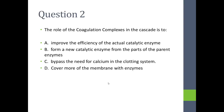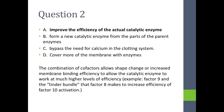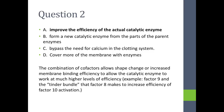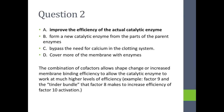Question 2: The role of the coagulation complexes in the cascade is to — A, improve the efficiency of the actual catalytic enzyme; B, form new catalytic enzymes from the parts of parent enzymes; C, bypass the need for calcium in the clotting system; or D, cover more of the membrane with enzymes. The answer is A. An example is that factor VIII functions a lot like a tinder bundle on a survival show — it's the ball in the middle of your fingers that allows more factor IXs to activate factor Xs and provides binding sites for the factor Xa on the membrane.